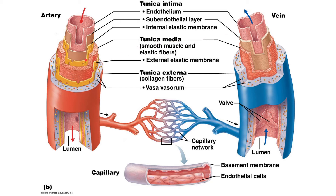Next is the tunica media — the muscle layer, plus what looks like Swiss cheese representing an elastic membrane, so smooth muscle tissue and elastic fibers in the artery. On the vein, we have muscle tissue but notice there are no elastic fibers. That's one of the main differences: in the artery, the tunica media is more muscular and contains extra layers of elasticity. Finally, the tunica externa consists of collagen fibers wrapping around the vessel, holding everything together and anchoring it in place. Those little dots represent the nerves and blood vessels that supply it.